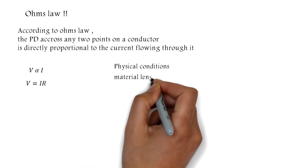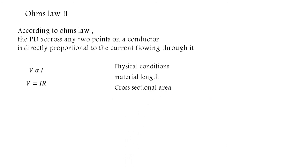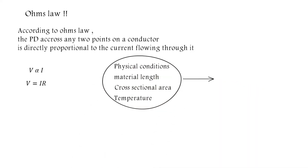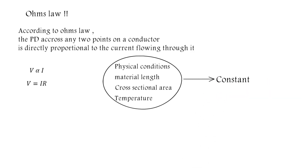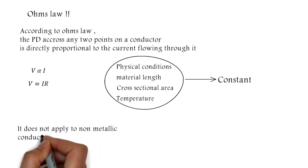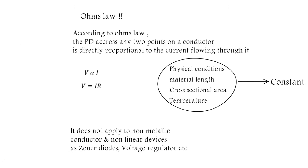Resistance depends on physical conditions such as the length of the material, the cross-sectional area of the conductor, and the temperature. These parameters must be constant to obey Ohm's Law. If they vary, the conductor won't follow this law — it does not apply to non-metallic conductors or non-linear devices such as Zener diodes and voltage regulators.